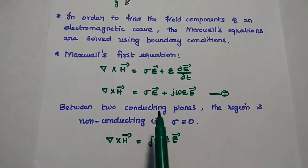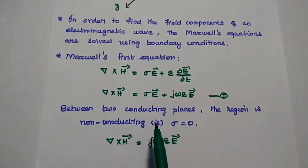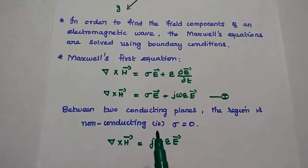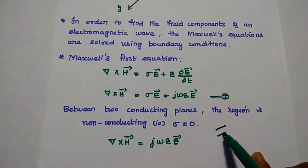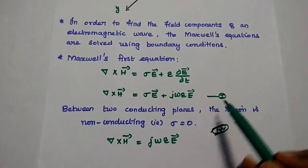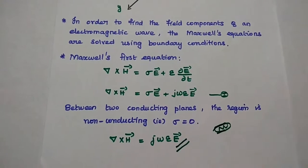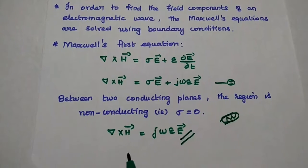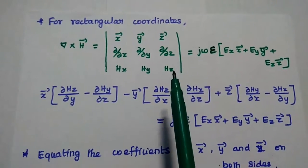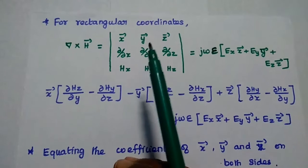Now we are going to find out the wave equation between the parallel planes. Between two conducting planes, the region is a non-conducting medium in order to avoid unwanted radiation or losses. The wave is propagating between the parallel planes and this region is a non-conducting medium, meaning σ = 0. Then this equation becomes del cross H = jωεE. We will use rectangular coordinates to expand this curl operation.